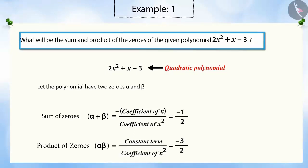So, in this way, we can find the sum and product of zeros of the given polynomial. Let us see another example.